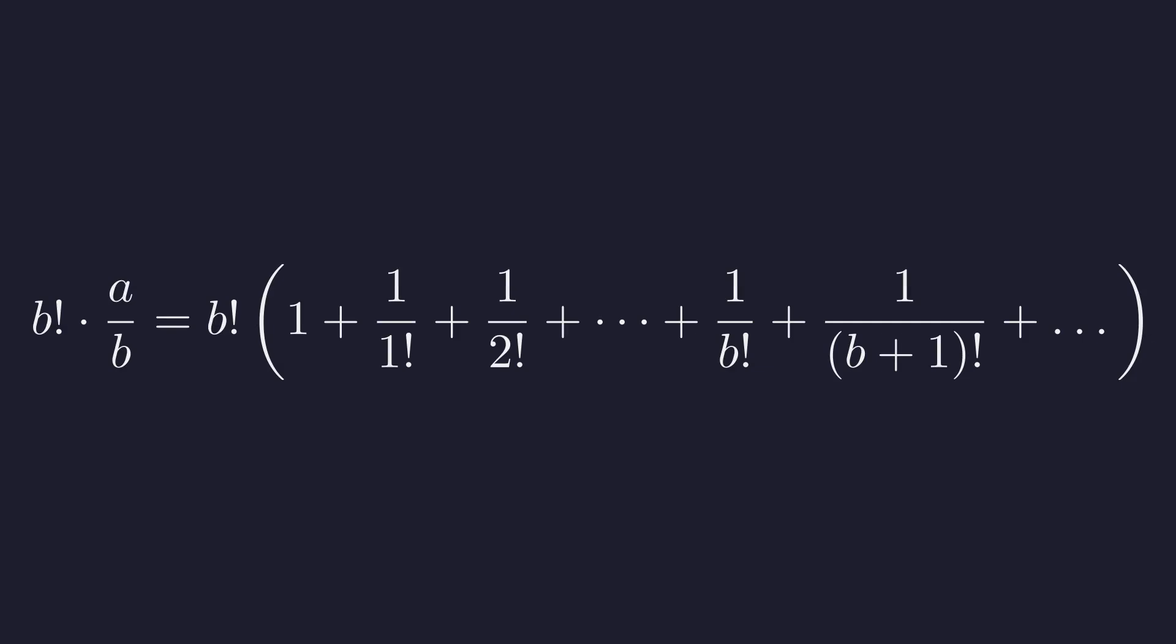On the left, we have B factorial times A over B. On the right, B factorial multiplies the entire series.